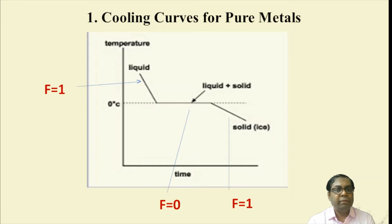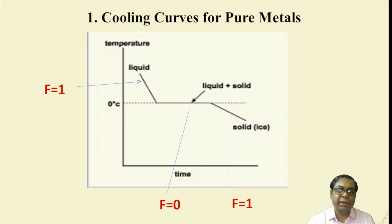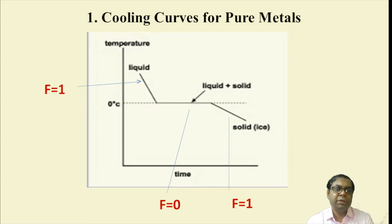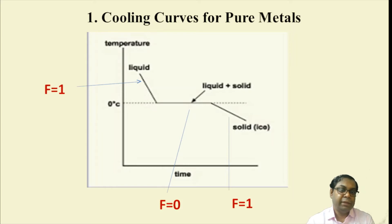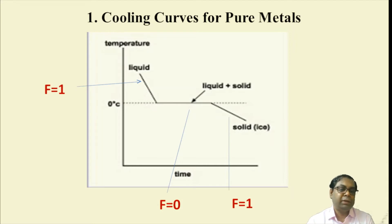We can reverse the curve in the same way. For a solid material — in the case of ice — when we provide heat energy, it will start melting only at zero degrees Celsius. Until the entire mass of ice is completely converted to pure liquid, there will be no change in temperature even though we are applying heat. As soon as it is completely converted to liquid, temperature will rise. F1 and F0 indicate the number of phases present.